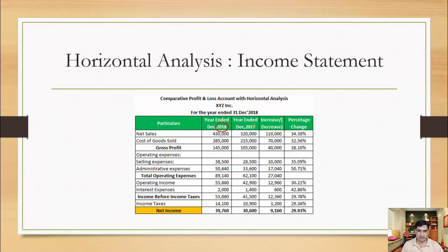Let's take an example. We have the income statement for 2018 and 2017. We first calculate the increase or decrease by amount: it was 320,000 in 2017 and 430,000 in 2018 — so the absolute change is 110,000 increase. By percentage, it is increasing by 34.38 percent. We do this for every item: how much COGS is increasing and by what percentage, how much selling, general, and admin expenses are increasing by amount and by what percent, and how much profit is increasing.